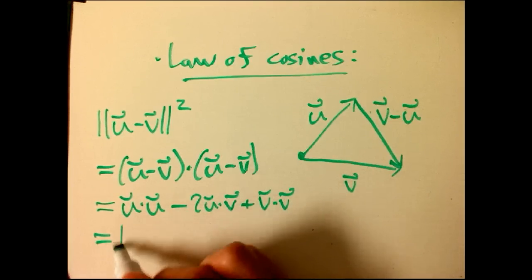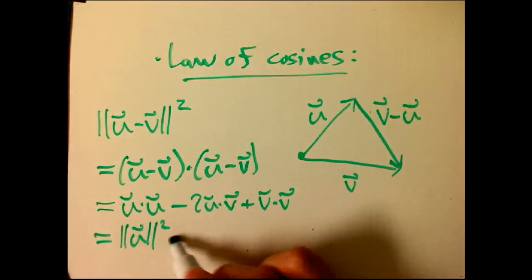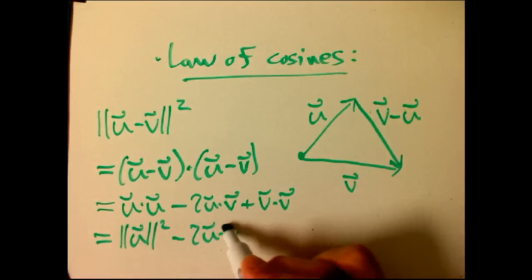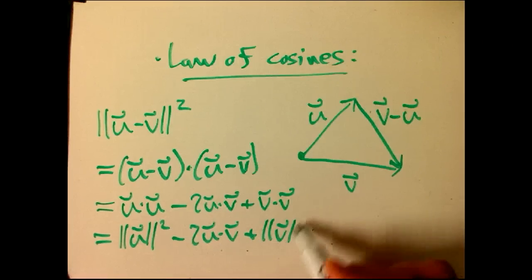gives me u dot u minus 2 u dot v by symmetry plus v dot v. Okay, u dot u, that's back to a geometric notion. That's the magnitude squared.